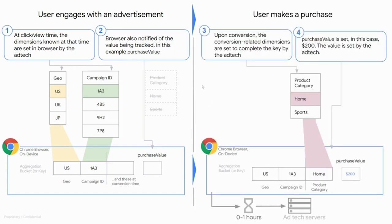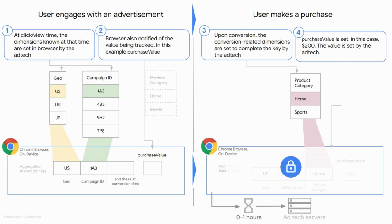Then at a later time, when the user makes a purchase or some sort of conversion, the ad tech can then add in the conversion site information into the aggregation bucket. In this case, that would be the product category, which wouldn't be known until the user makes a purchase. So at that time, the ad tech would register this event and add to the aggregation bucket — in this example, the home value. Additionally, at this time, the ad tech would also set the associated value for this bucket, which would be the purchase value, indicated here by the 200 that has been placed in the purchase value bucket. The aggregation bucket now consists of a geography value, a campaign ID value, a product category value, and an associated purchase value. After all of these values are set, an aggregate report is generated by the browser, which includes encrypting the data and then sending it to the ad tech servers after a certain amount of delay. That summarizes the creation of one aggregate report.